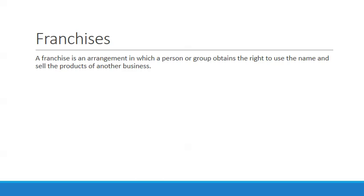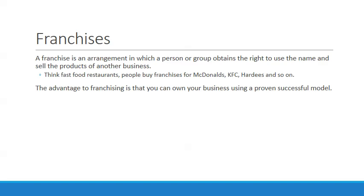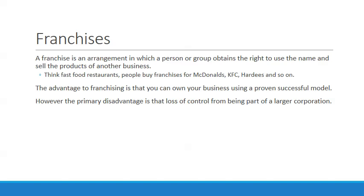The last of our four business types is a franchise — an arrangement in which a person or group obtains the right to use the name and sell the products of another business. You see these all the time: Subway, Burger King, McDonald's, KFC — these are franchises. People buy the franchise and run it themselves, but it's part of a larger business model. The advantage is you can own your own business using a proven successful model. The disadvantage is you lose some control — when McDonald's makes decisions, you're expected to follow them within that larger corporate business model.